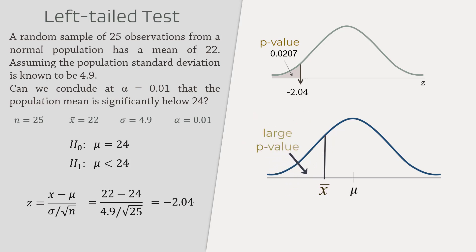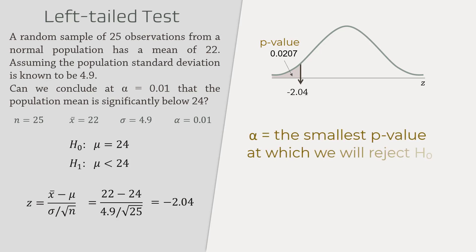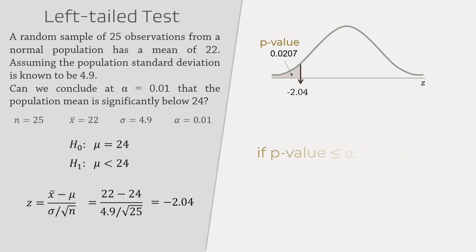A large p-value, on the other hand, suggests that the sample statistic is close enough to the population parameter, and that will lead us to not reject the null hypothesis. For our purposes here, we will be comparing the p-value to the specified significance level alpha. The significance level alpha, which we decide before conducting the test, is the smallest p-value at which we will reject the null hypothesis. That is, if the p-value is less than or equal to alpha, we will reject the null hypothesis; otherwise, we will fail to reject it.